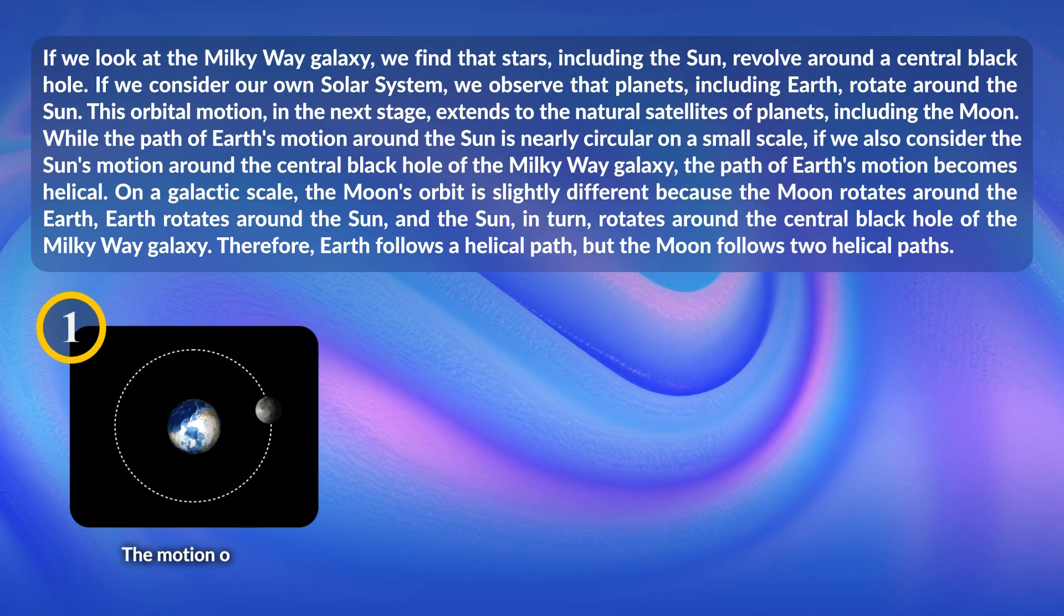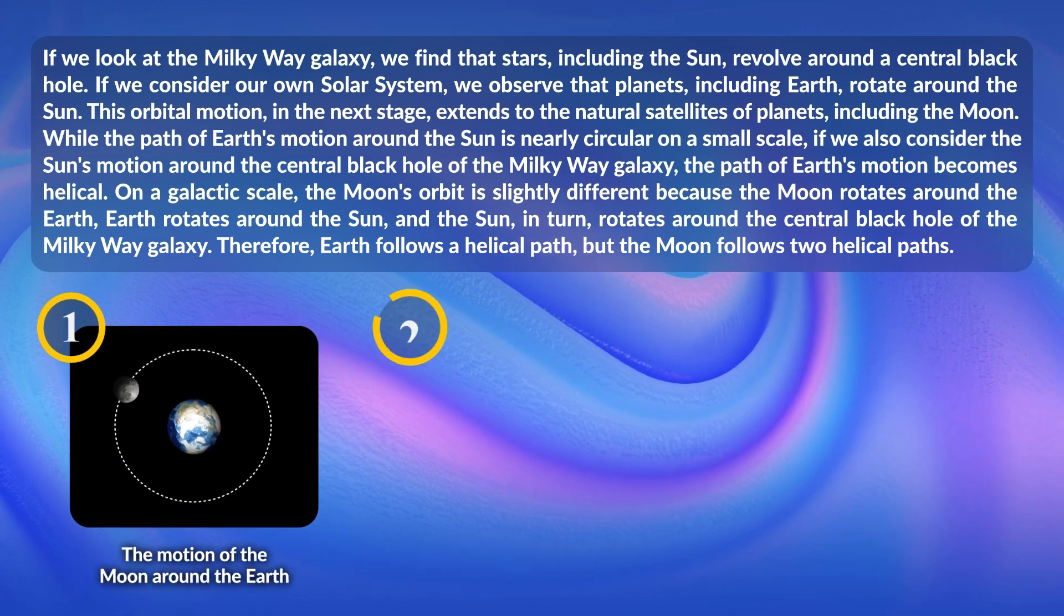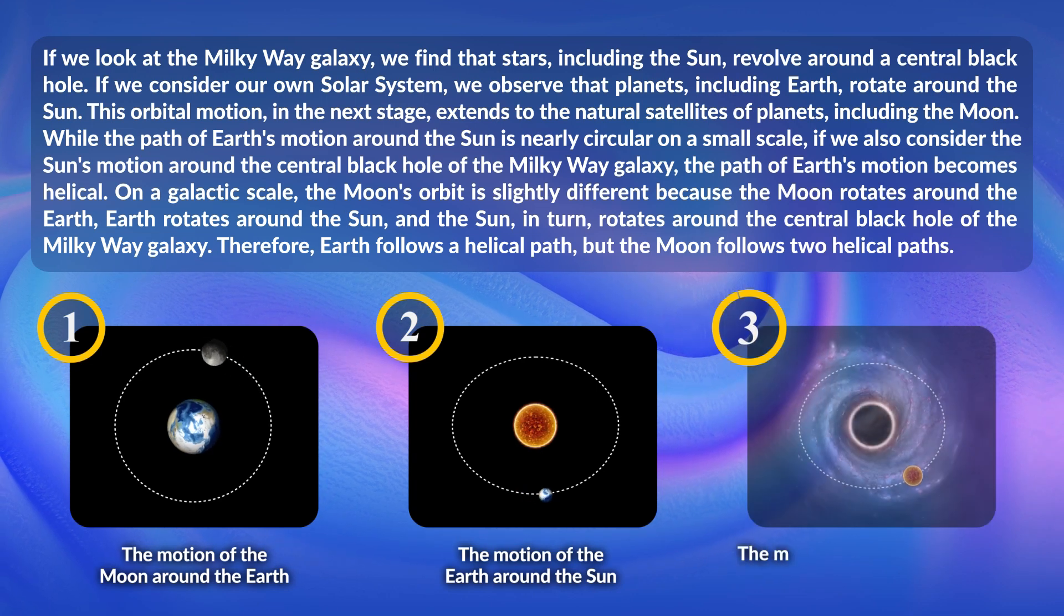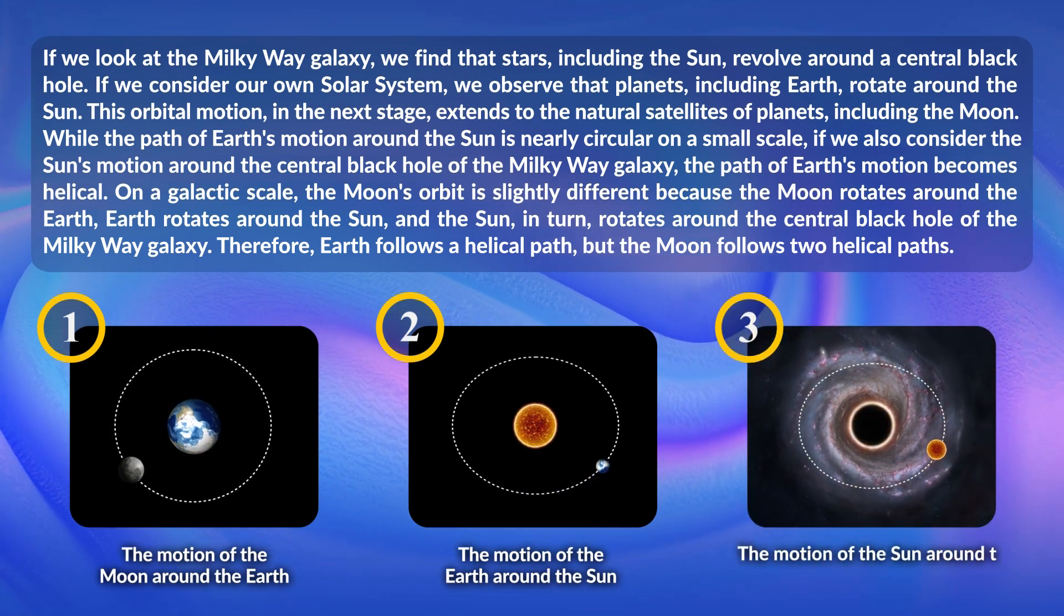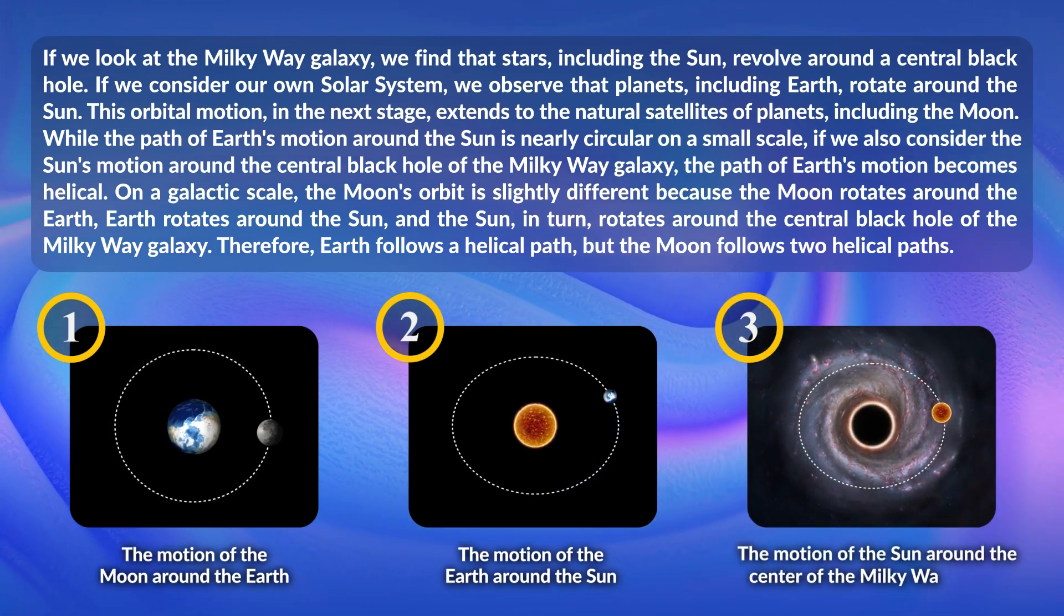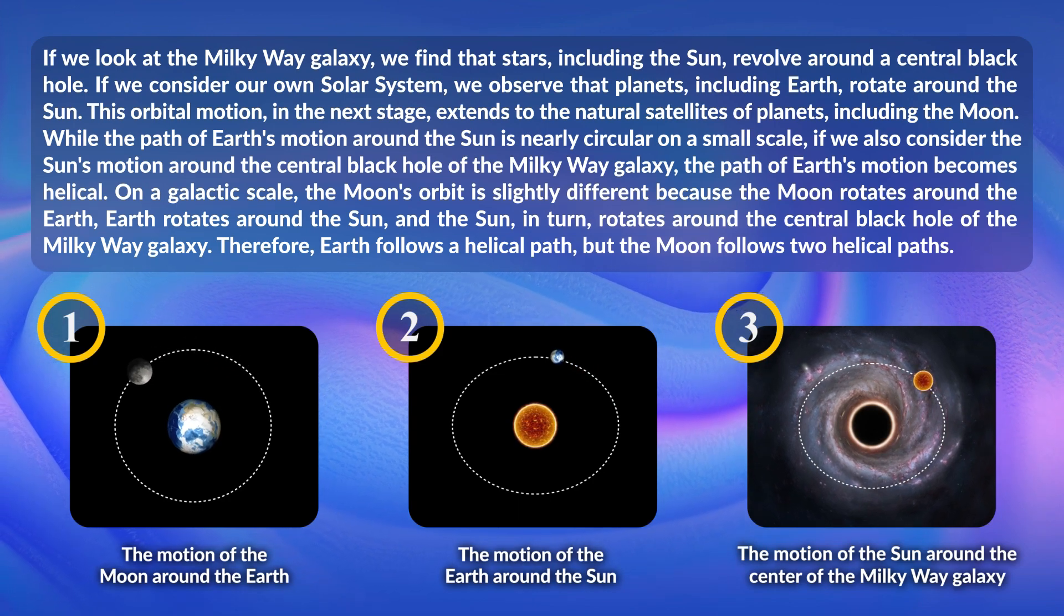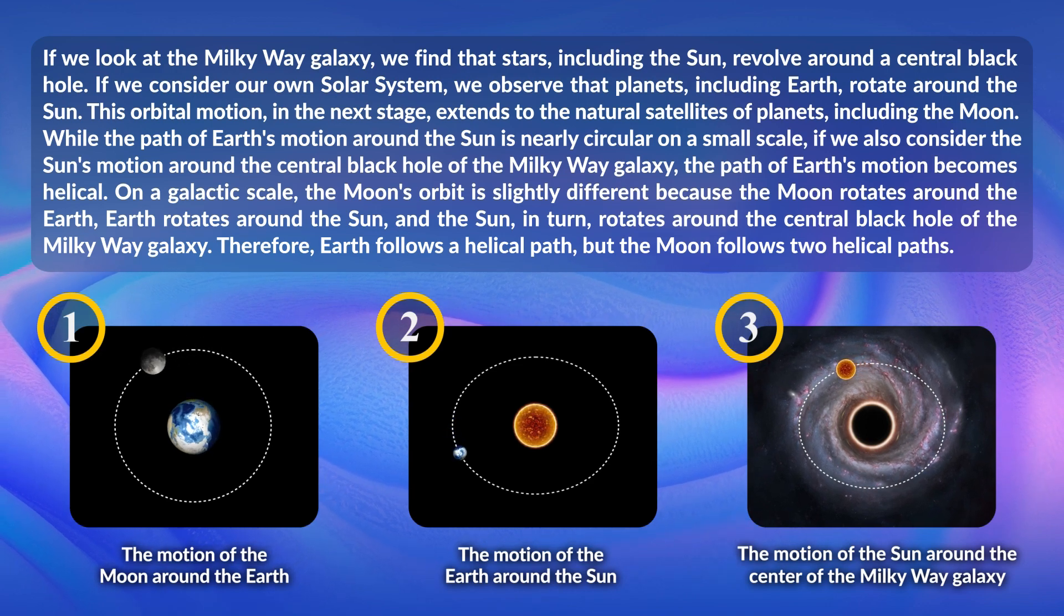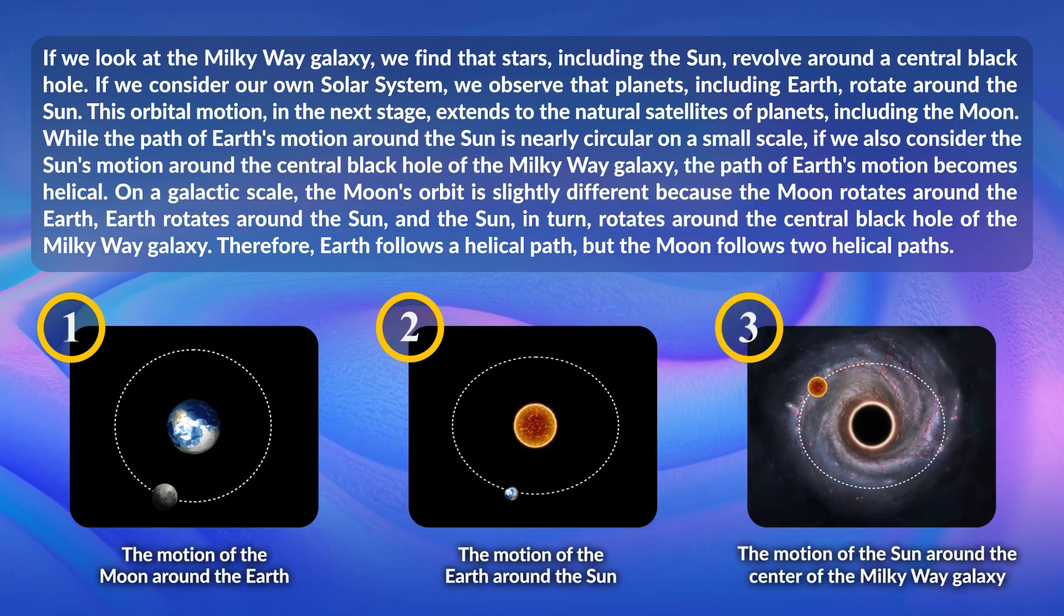If we look at the Milky Way Galaxy, we find that stars, including the Sun, revolve around the central black hole. If we consider our own solar system, we observe that planets, including Earth, rotate around the Sun. This orbital motion in the next stage extends to the natural satellites of planets, including the Moon.